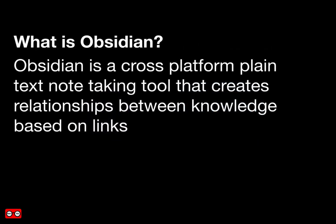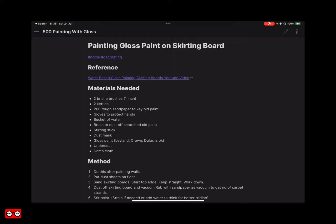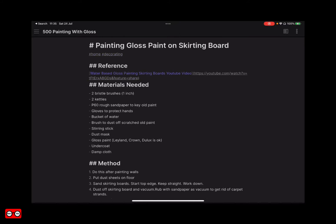Obsidian is a cross-platform plain text note-taking tool. All notes are written in Markdown and it creates relationships between knowledge based on links, tags, and other relationships. This is an example of a Markdown page in preview mode in Obsidian, and this is the same note in the Markdown view.